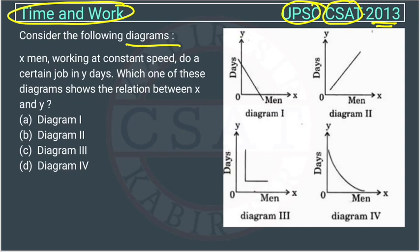X men working at constant speed do a certain job in Y days. On the X-axis they have given the number of men, and on the Y-axis they have given the number of days. Which one of these diagrams shows the relation between X men and Y days?